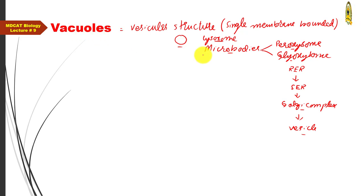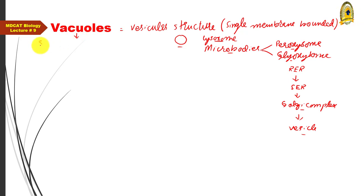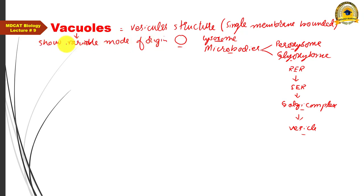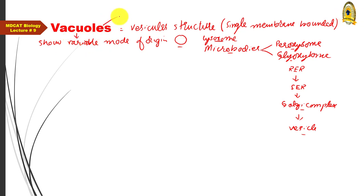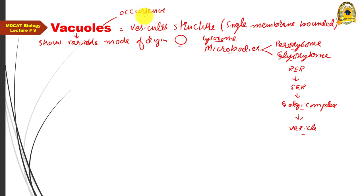In contrast, vacuoles show a variable mode of origin — they originate from different locations within the cell. As for their occurrence, vacuoles are found in both plant and animal cells, though the concept of vacuoles differs somewhat between the two.